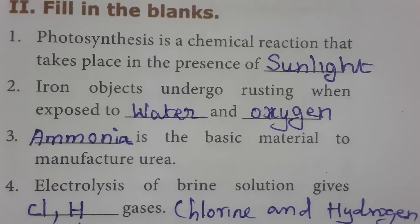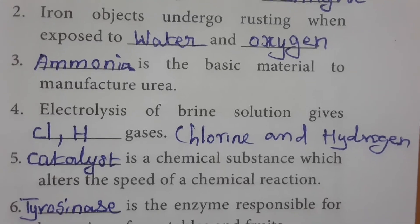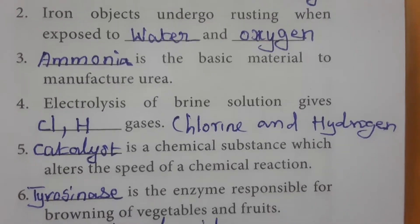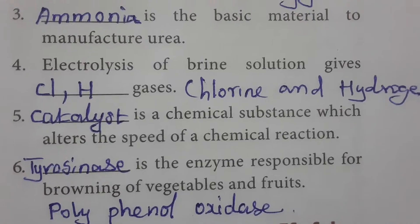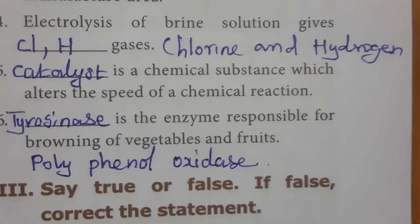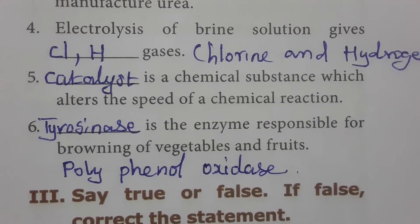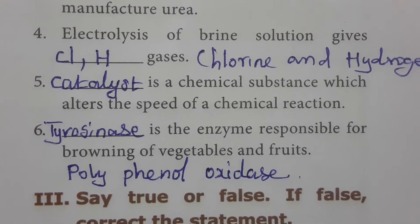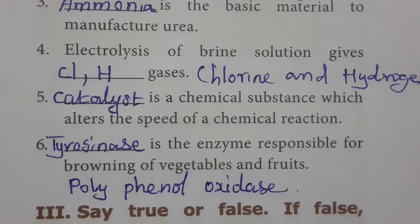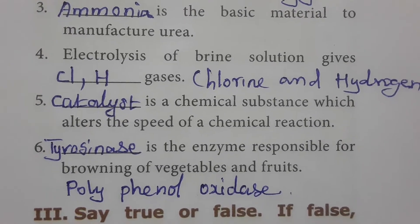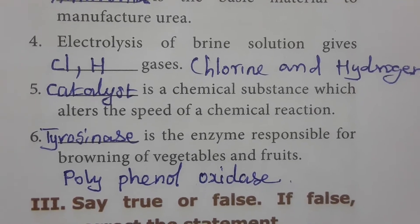Fill in the blanks: Photosynthesis is a chemical reaction that takes place in the presence of sunlight. Iron objects undergo rusting when exposed to water and oxygen. Ammonia is a basic material used to manufacture urea. Electrolysis of brine solution gives chlorine (Cl) and hydrogen (H) gases. Catalyst is a chemical substance which alters the speed of a chemical reaction — if a reaction is happening very slowly, adding a catalyst or applying heat can increase its speed.